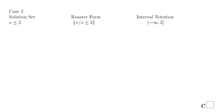Case two: x less or equals two. Roster form: x when x is less or equals two. Look at the interval notation — we start from negative infinity with a parenthesis. Remember, parenthesis for infinity or negative infinity, then comma, two, and bracket, because we have the equal sign, like in the previous case. The bracket is open towards the left, towards the solution set.